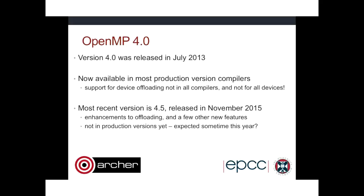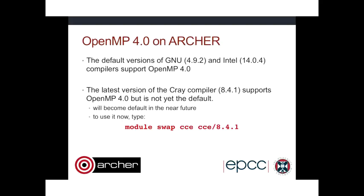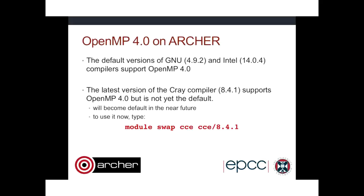I wouldn't be surprised if we saw compilers shipping with 4.5 sometime later this year. As far as OpenMP 4 is concerned, we have three compilers available on Archer. The default versions of GNU and Intel compilers support OpenMP 4. The latest Cray compiler, version 8.4.1, supports OpenMP 4 but that's not yet the default. To use it now you can do the module swap and exchange the default CCE module for CCE 8.4.1.